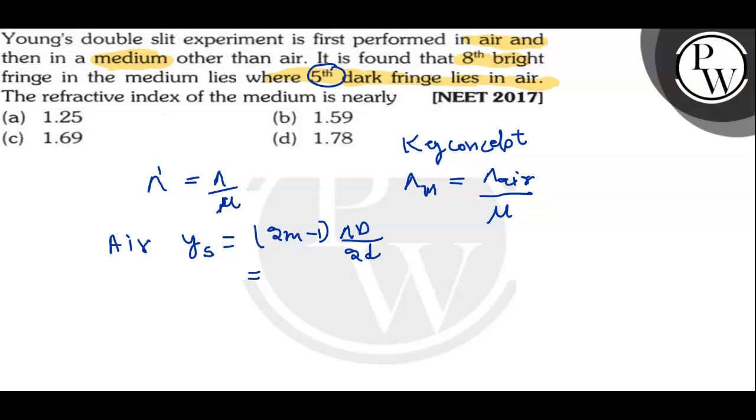So, the value would be 2 into 5 into 2, 10. 10 minus 1, 9. 9 of lambda D upon 2D. This is for 5th dark fringe.